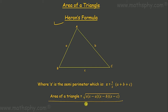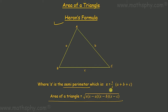Area of a triangle — prior to using this formula, what we need to calculate is the semi-perimeter. We already know what the perimeter is. Perimeter means the total length of all the sides: A plus B plus C. That's the perimeter of a triangle. Semi-perimeter means add up all three sides and divide by 2.